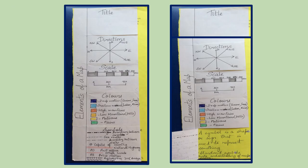A fifth element of a map is symbol. A symbol is a shape or sign that is used to represent something. Standard symbols make understanding of maps easier.